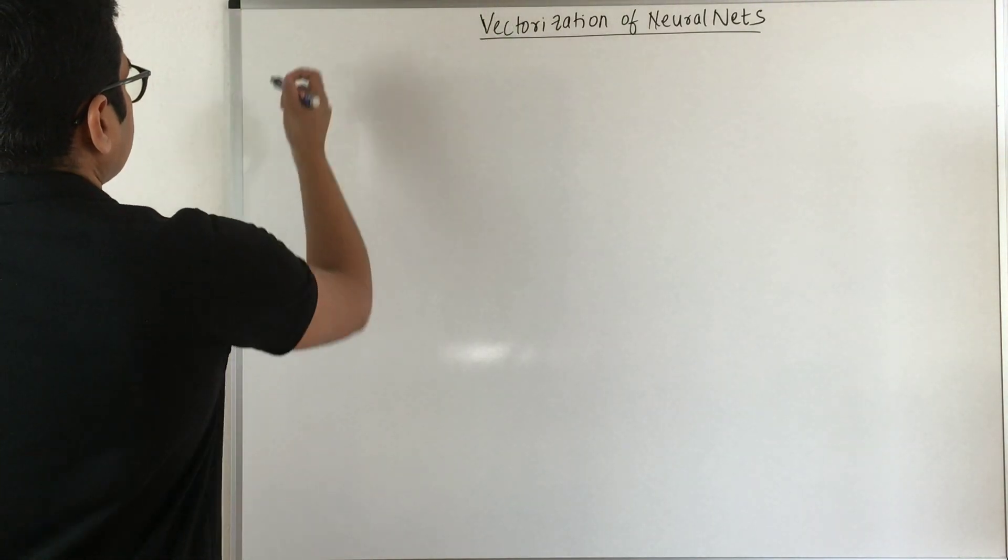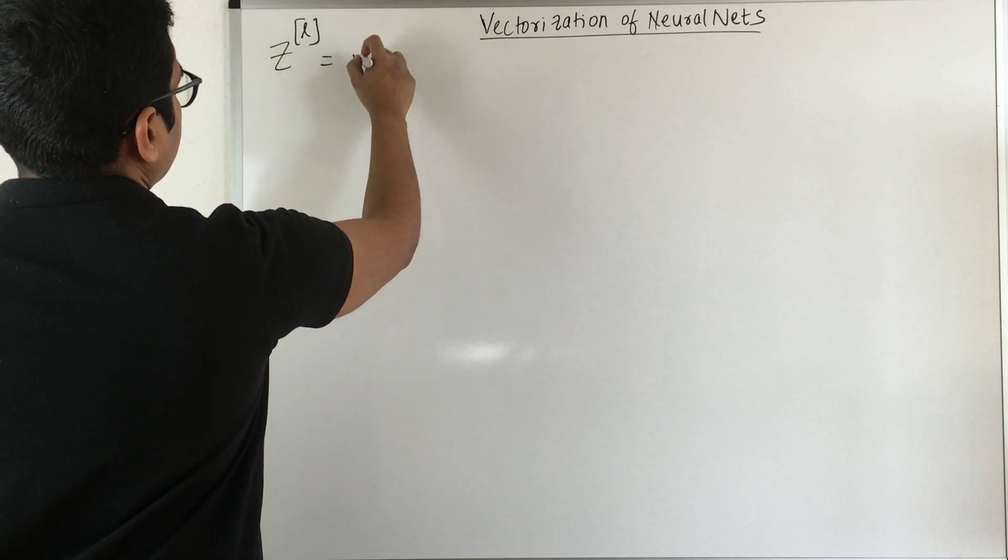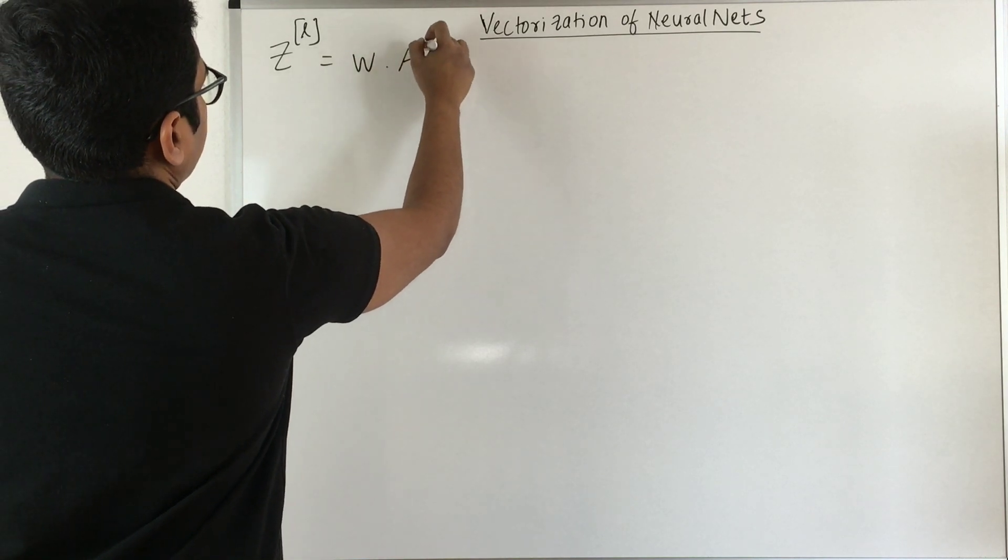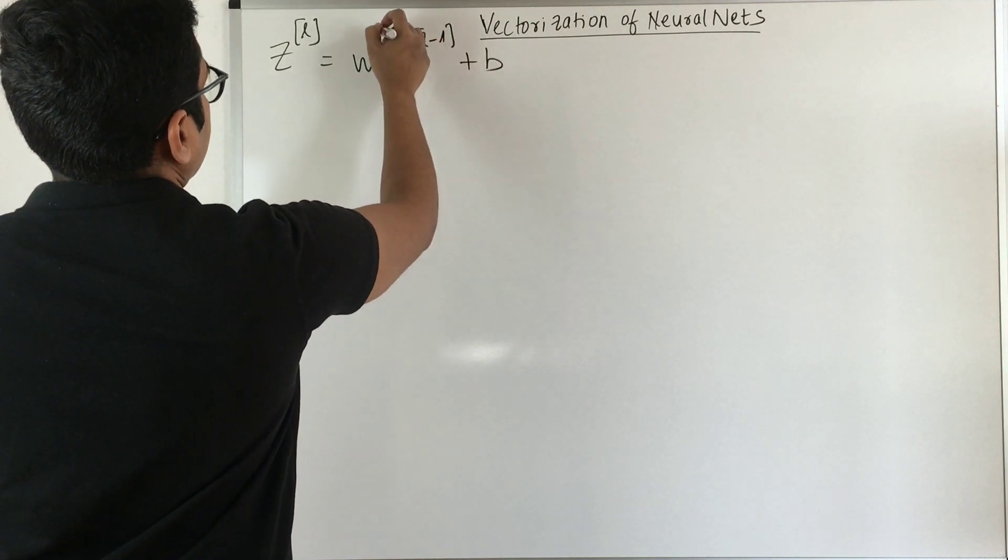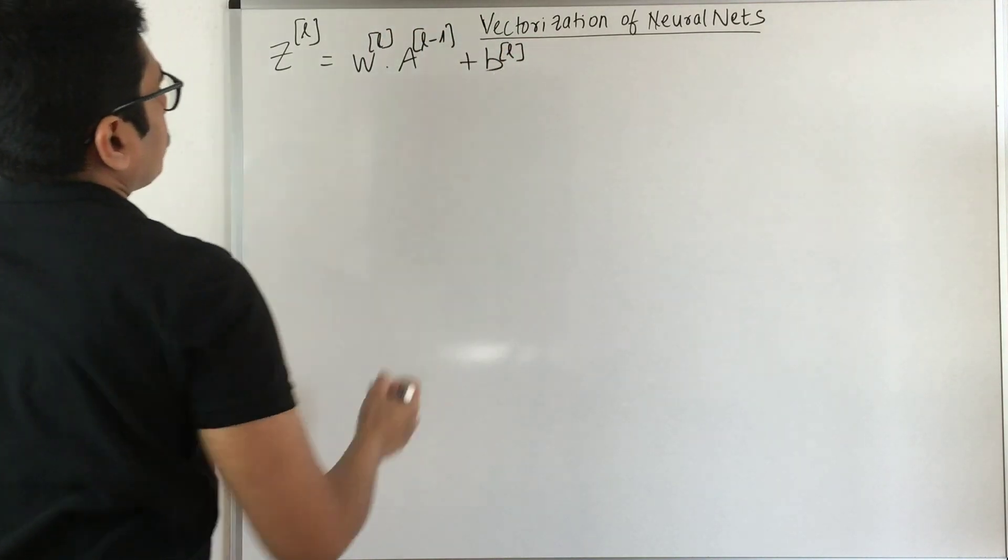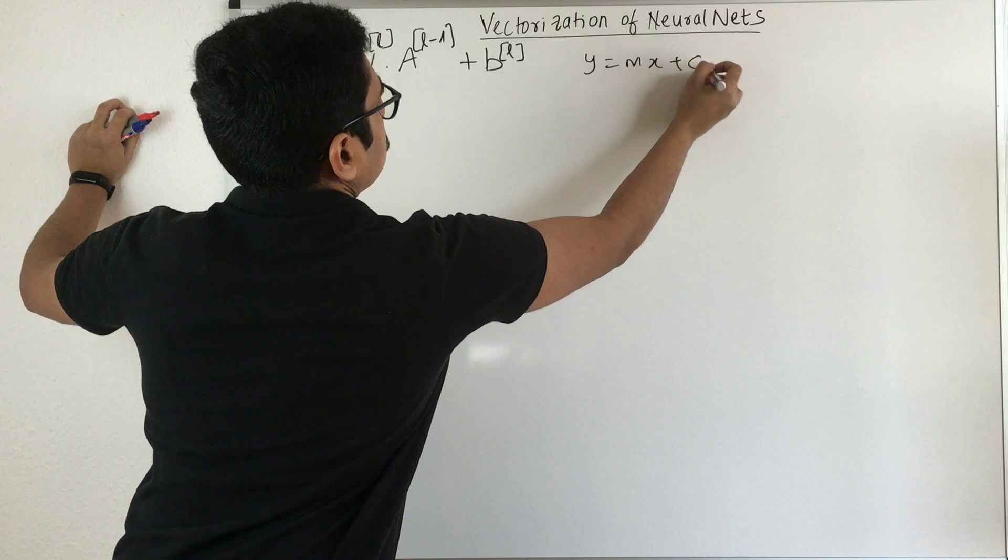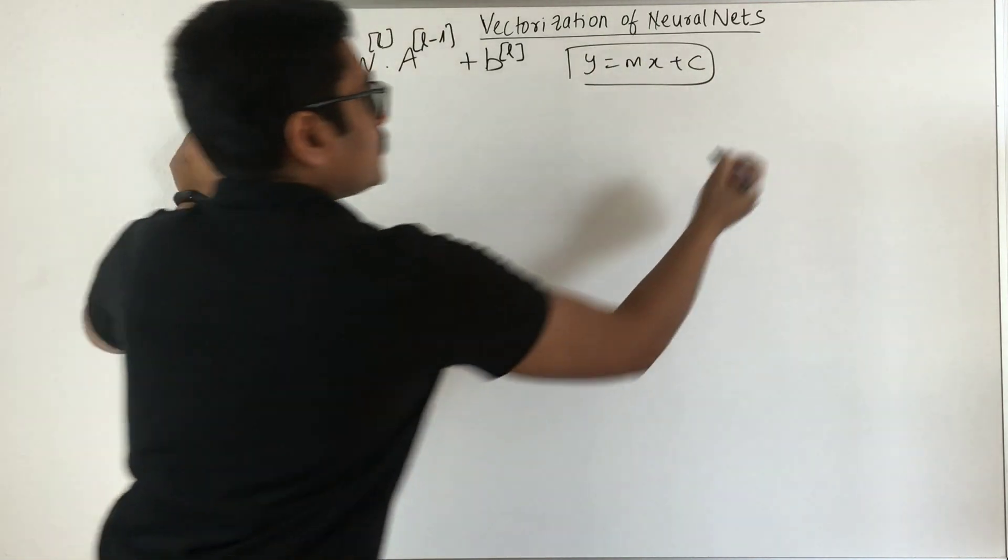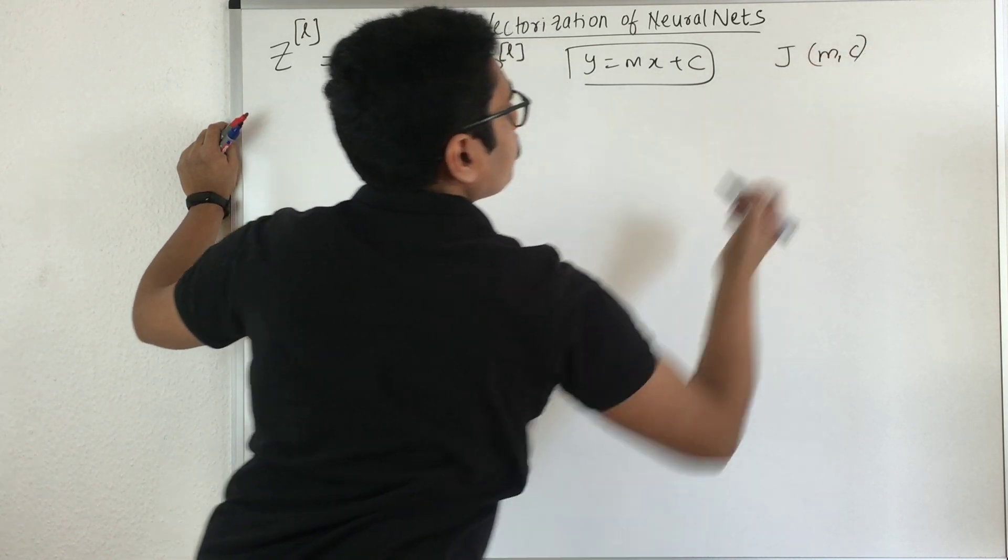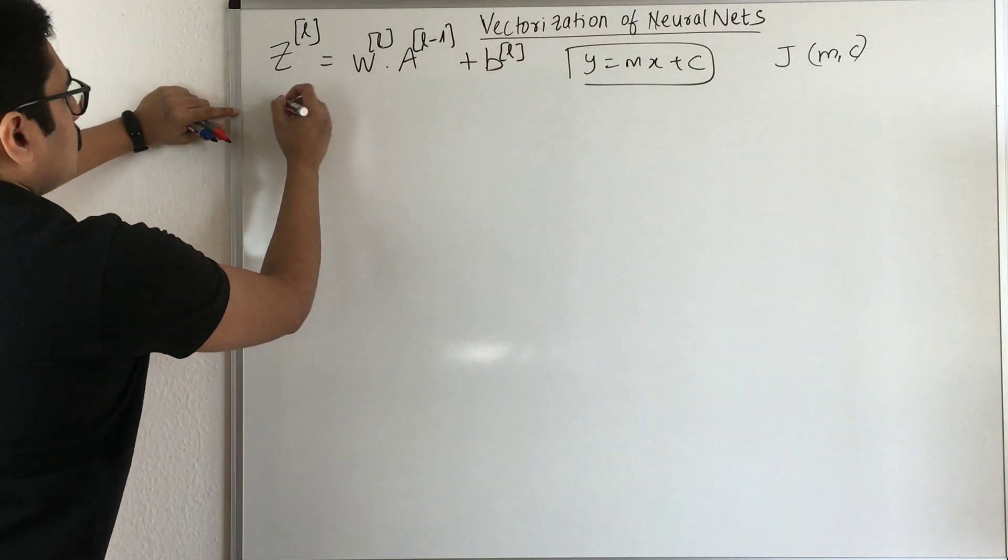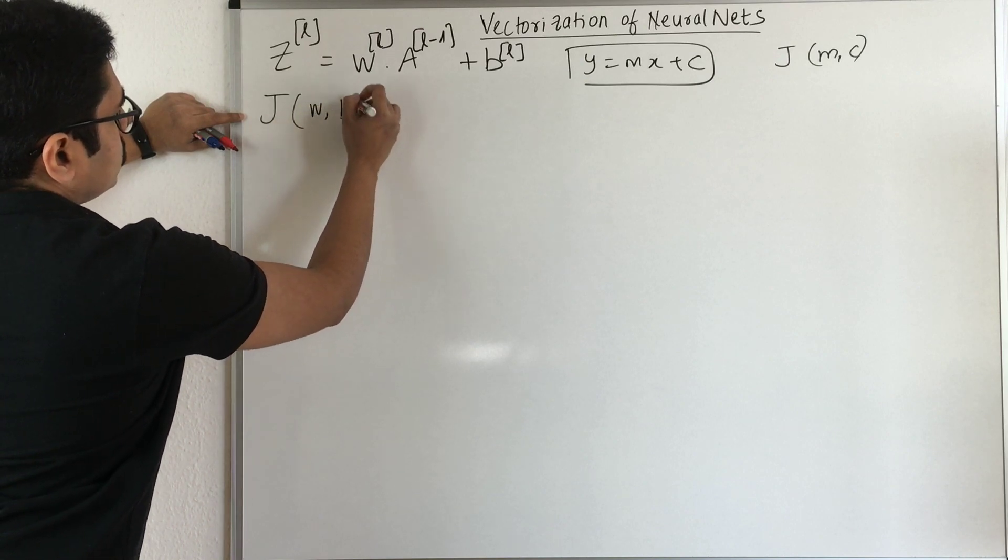Basically, we have this equation where the output at one particular layer is represented as W times the output from the previous layer (L minus one) plus the bias at that layer. This equation is of the form Y equals MX plus C. In linear regression, the cost J was dependent on the slope and intercept. Similarly here, we have the cost function J dependent on the weight as well as the bias.